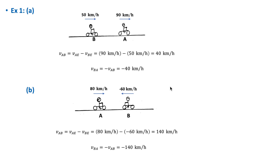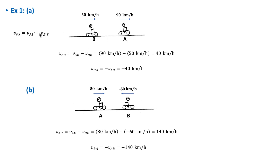Now let's consider two examples. In example one, part A, two motorcyclists A and B are driving along the same road with speeds of 90 km/h and 50 km/h respectively. We want to find the velocity of A relative to B and of B relative to A. Taking S as the earth (E), S' as the frame attached to B, and P as motorcyclist A, we get V_AB equals 90 minus 50, which is 40 km/h.